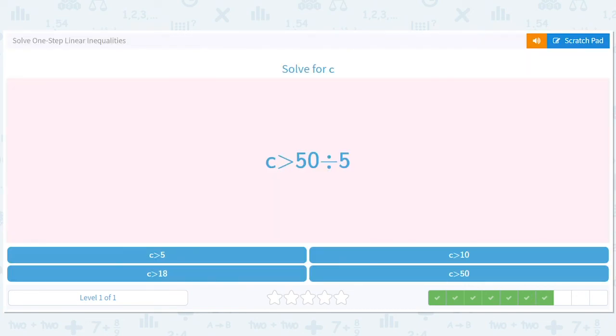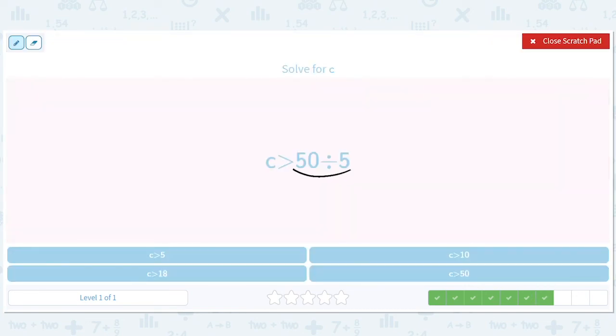C is greater than 50 divided by 5, which is our favorite number. 10. C is greater than 10. You might say, hey, 10's not my favorite number. Well, it should be. Reconsider.